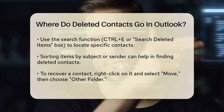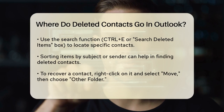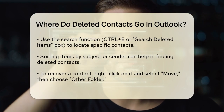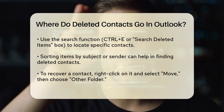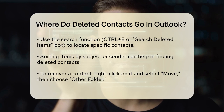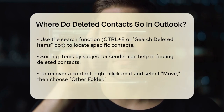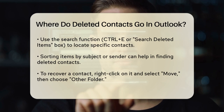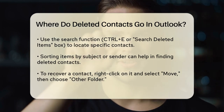Once you're in the Deleted Items folder, you can use the Search function to find the specific contact you're looking for. You can press Ctrl-E or use the Search Deleted Items box to search for the contact. You can also sort the items by Subject or Sender to make it easier to find what you're looking for.